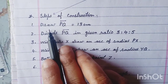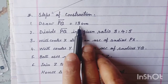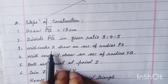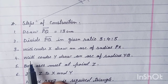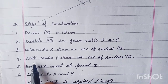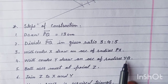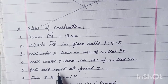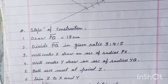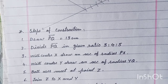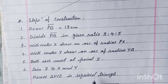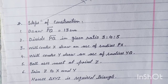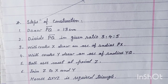Steps of construction: Number one, draw PQ line segment equal to 13 centimeters. Divide PQ in given ratio 3, 4, and 5. Step number three, with center X draw an arc of radius PX. Step number four, with center Y draw an arc of radius YQ. Both arcs meet at point Z. Join Z to X and Y — hence triangle XYZ is the required triangle. Students, I hope your work will be correct — do more practice. Allah Hafiz.